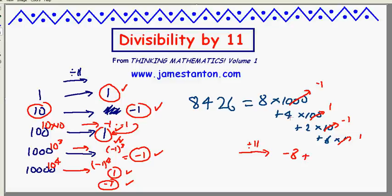So this really leaves the same remainder upon division by 11 as 8 groups of negative 1, negative 8, and 4 groups of 1, positive 4, and 2 groups of negative 1, negative 2, and 6 groups of positive 1, 6. That is, it leaves the same remainder as negative 8 plus 4 minus 2 plus 6, which is 0. Therefore, 8,426 must have been a multiple of 11.